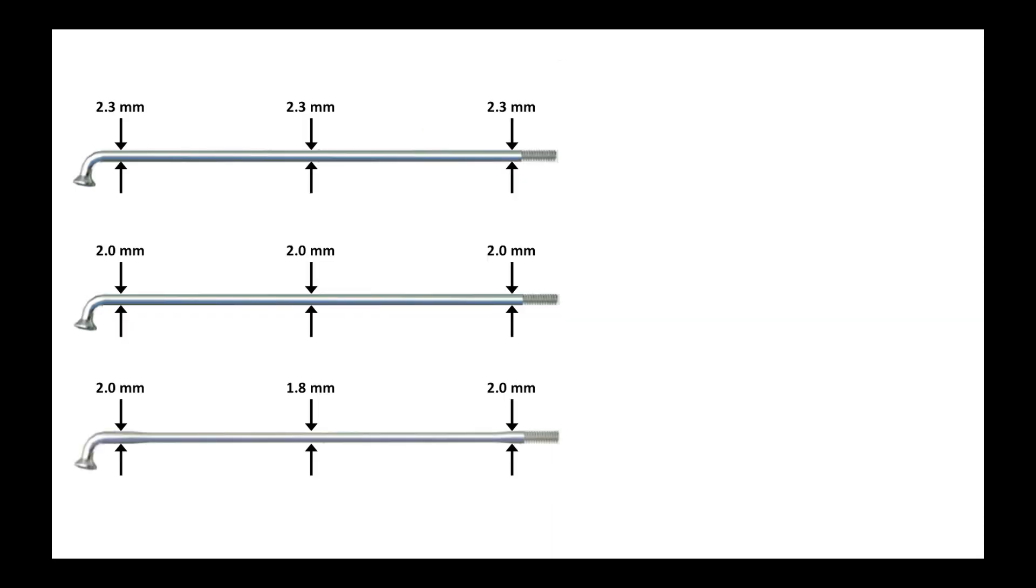Here we see three SAPIM spokes of varying dimensions. The one on the top is a straight gauge spoke with a constant diameter of 2.3 millimeters. In the middle is another straight gauge spoke with a constant diameter of 2 millimeters. The one at the bottom is a double butted spoke with 2 millimeters at the ends, but narrows down to 1.8 millimeters in the long middle section. From SAPIM you can see the data shown here in terms of the strength of the middle section in newtons per square millimeter.